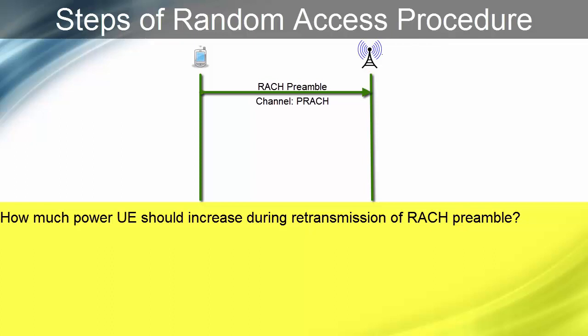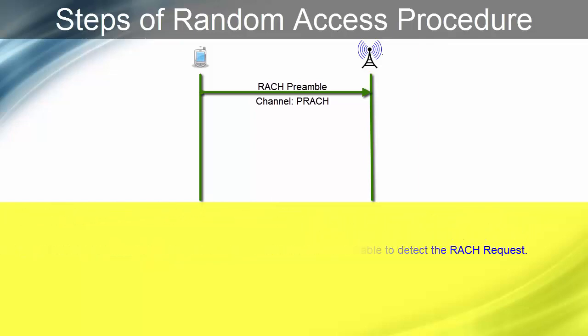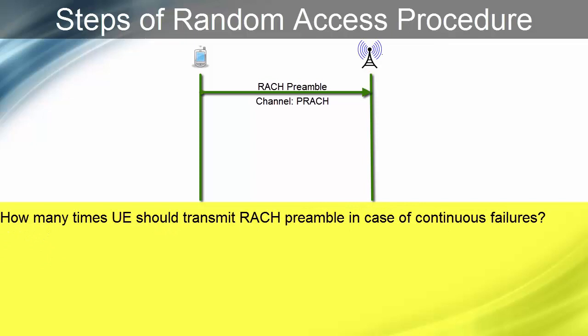SIB2 parameter 'power ramping step' is mainly used when eNodeB is not able to detect the RACH request. In case of some failure, UE will retransmit the RACH request by increasing the power by the power ramping step factor. SIB2 parameter 'preamble transmission max' decides the maximum number of retransmissions. It is necessary to have this parameter, otherwise UE may use all its battery if there are constant RACH failures.